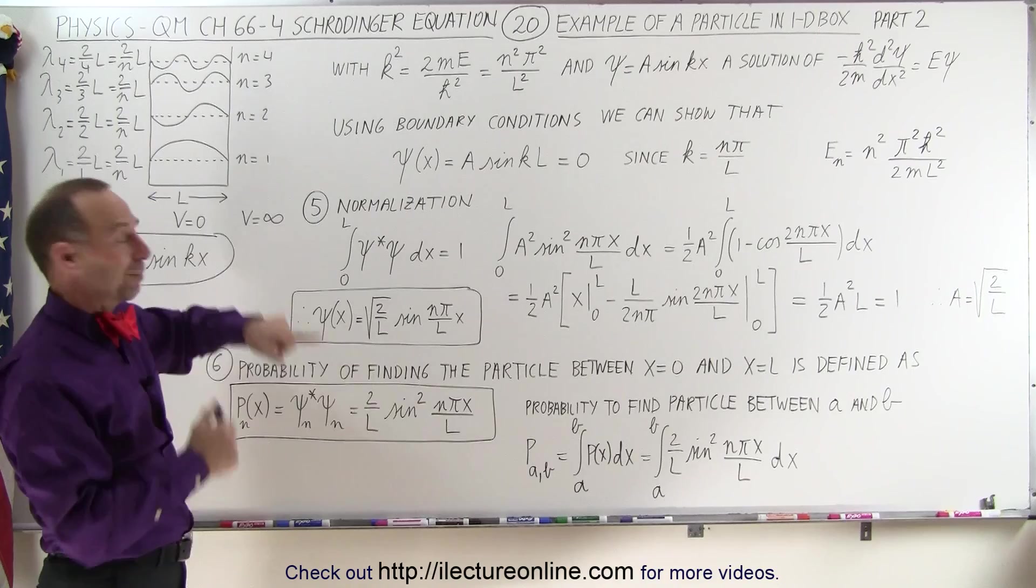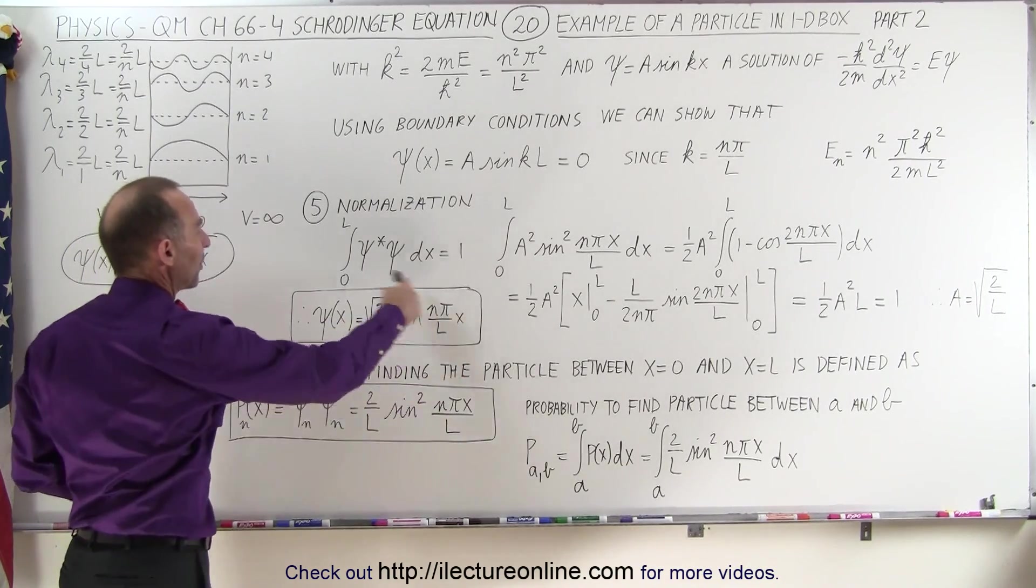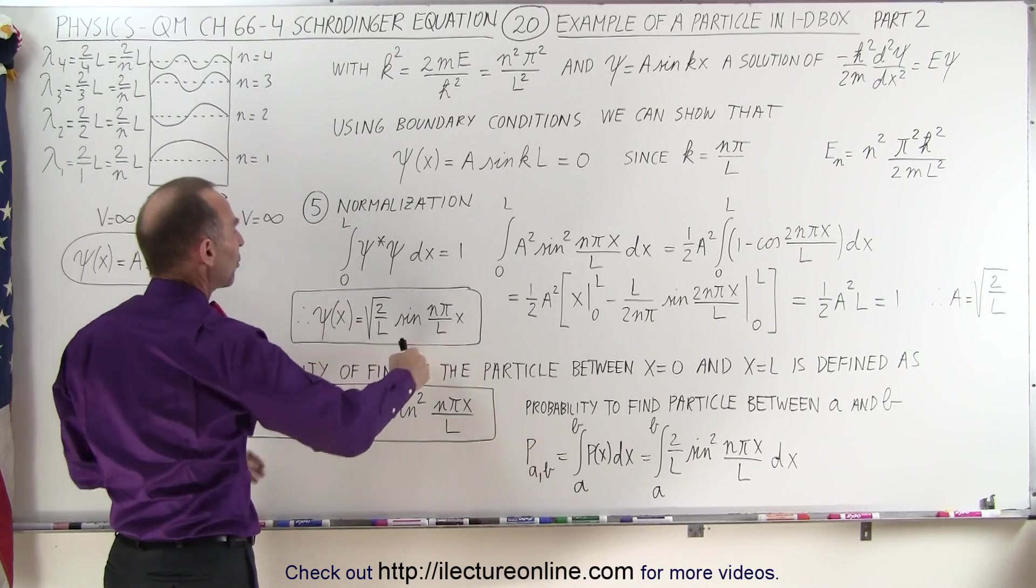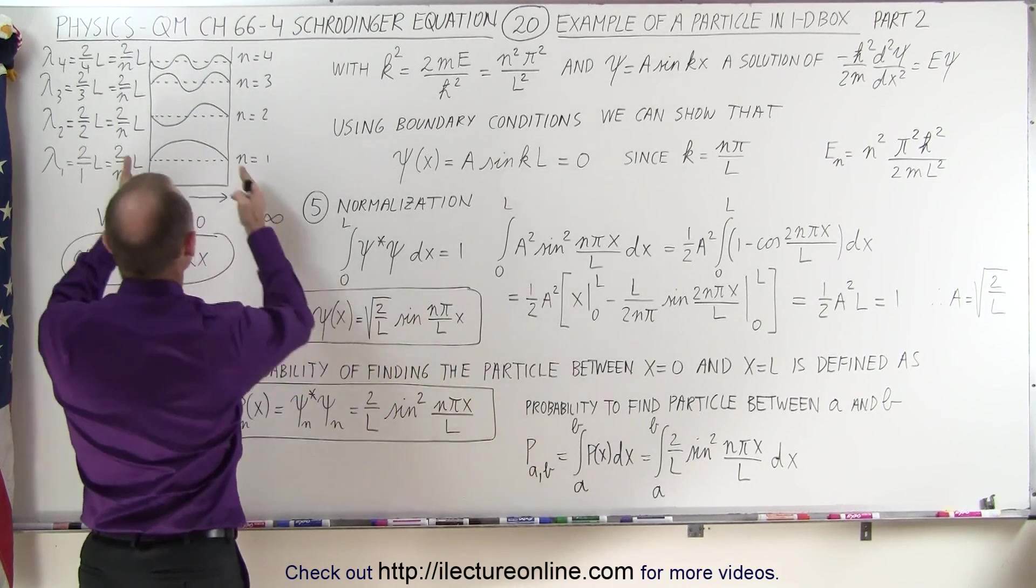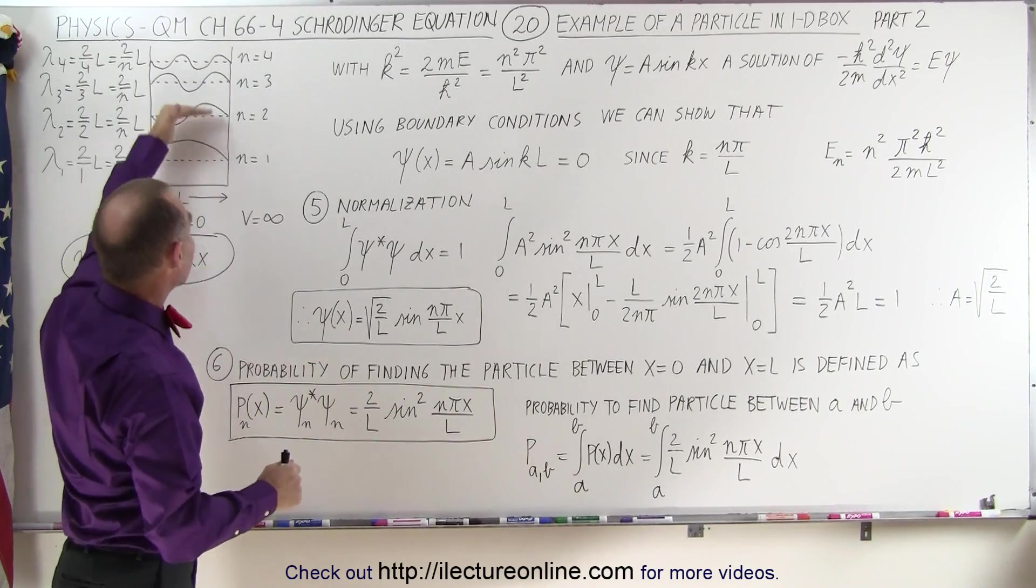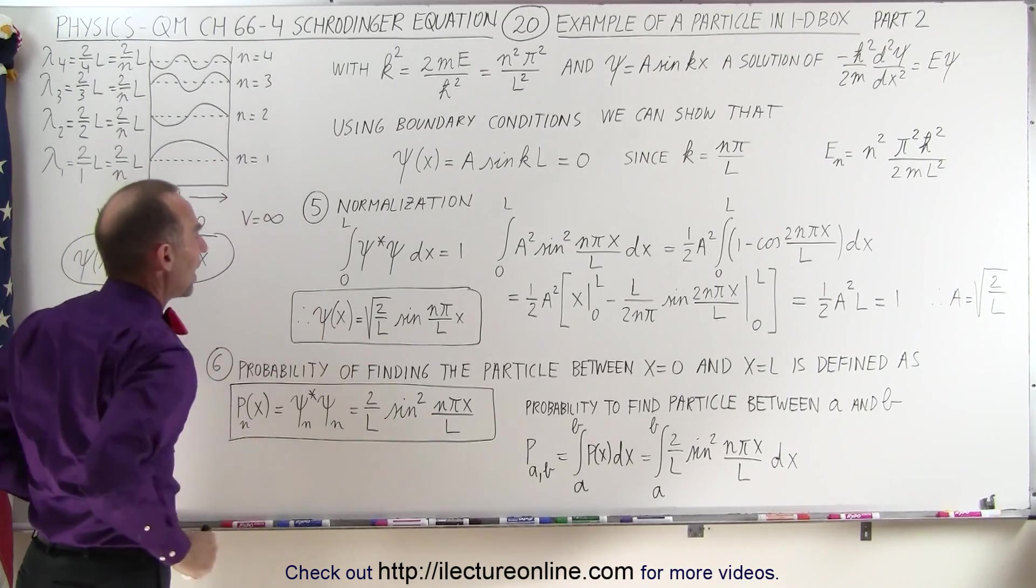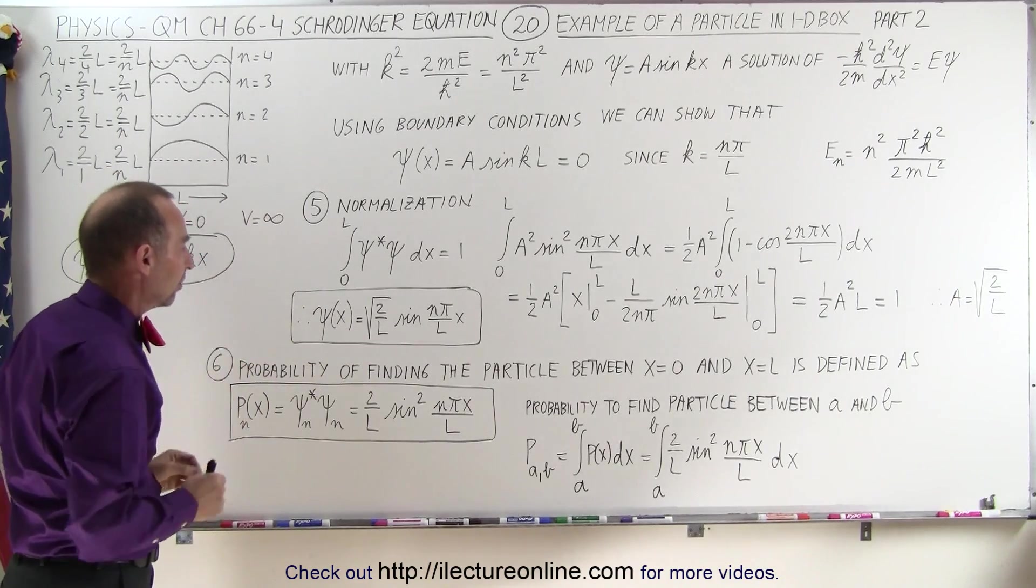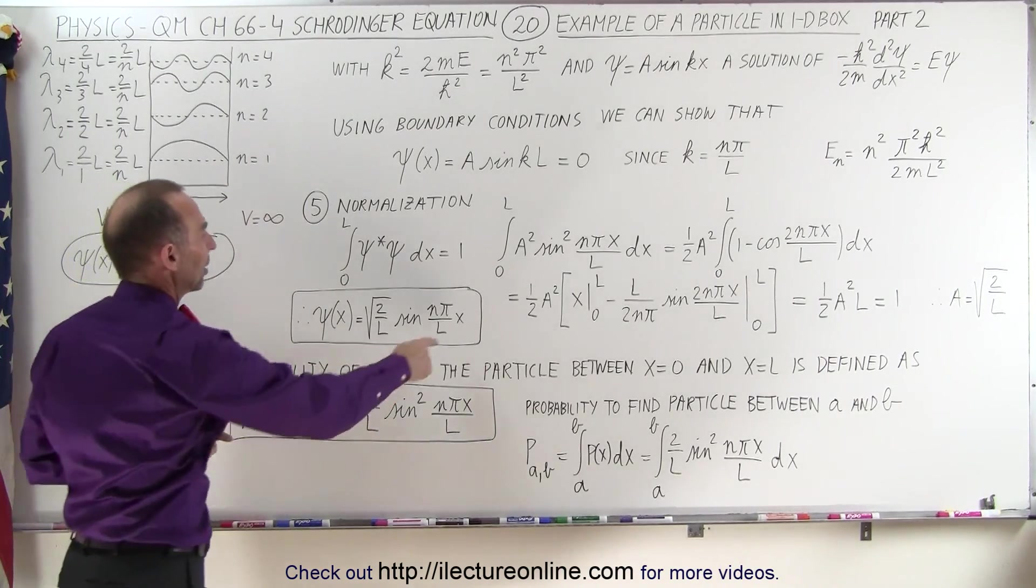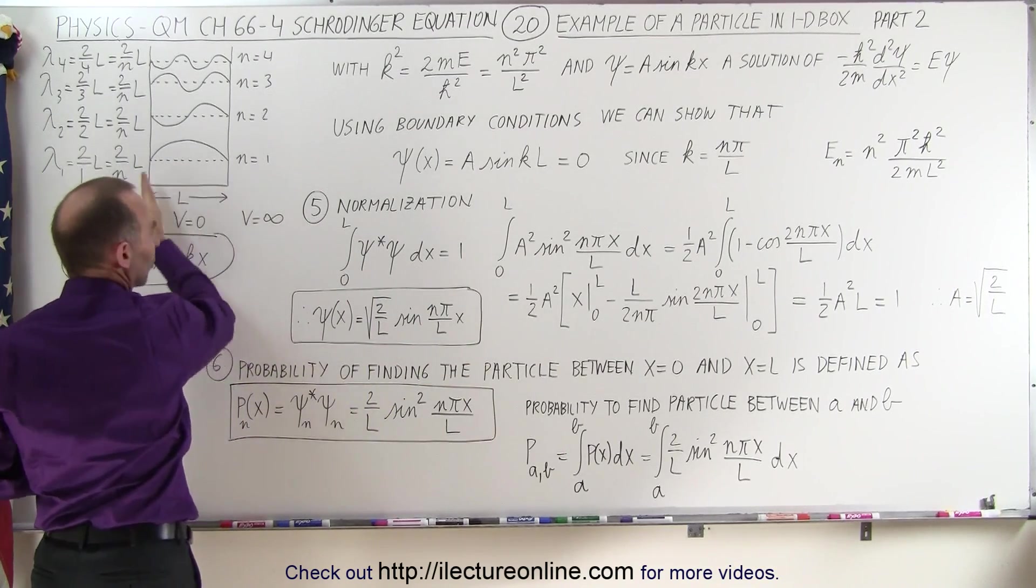So we plug that a into our equation, this now becomes the final wave equation for a particle in a one-dimensional box, where n represents the quantum number of the energy level we're in, and l represents the length of the box. Remember, it's just a one-dimensional box, it only has length. x then represents any point within that box between zero and l.